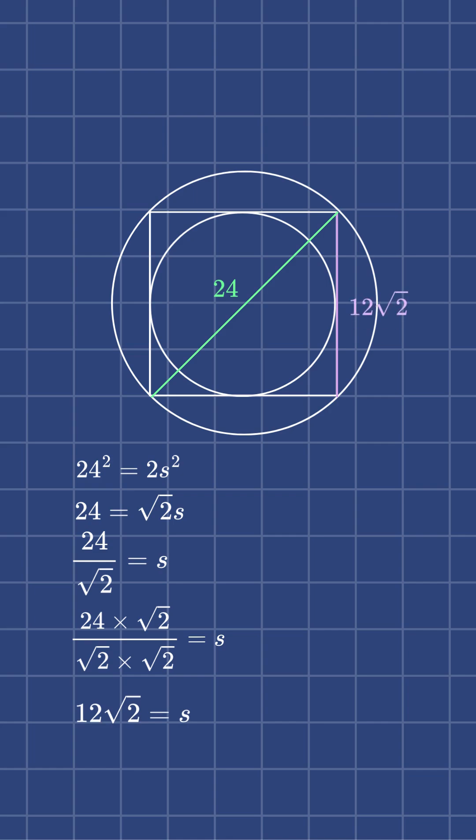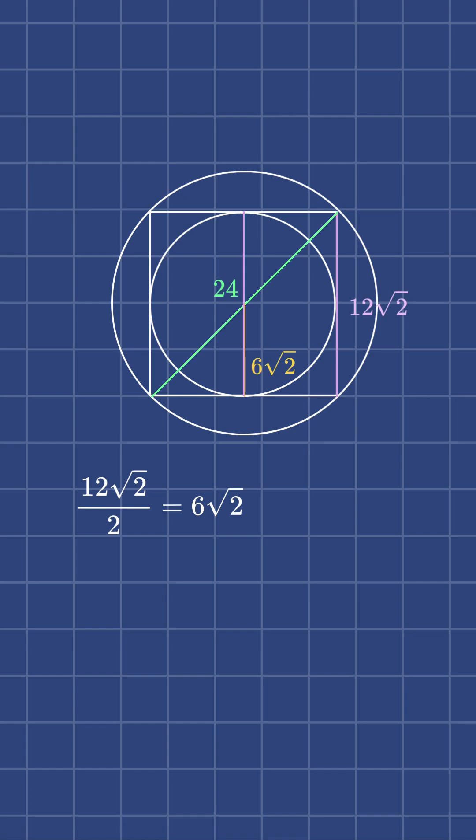From there, we can find the diameter of the inner circle with that, and then divide by 2 to find the radius, which is 6√2 meters.